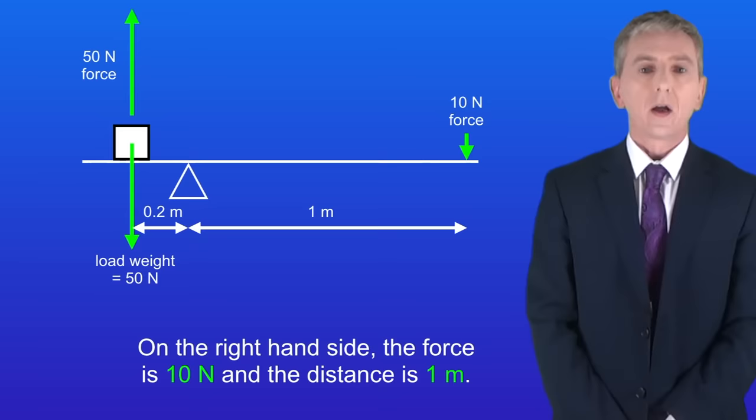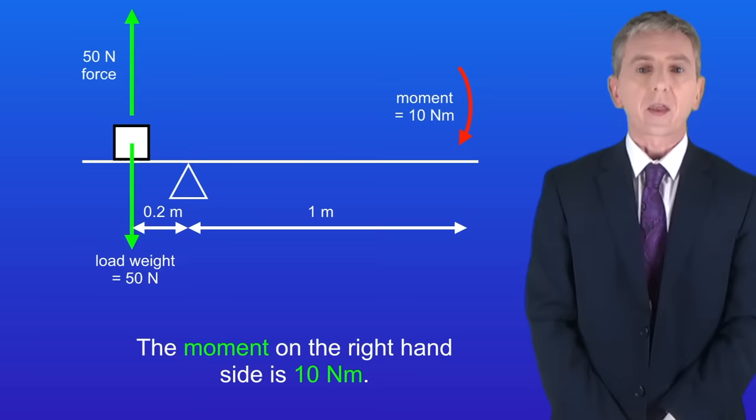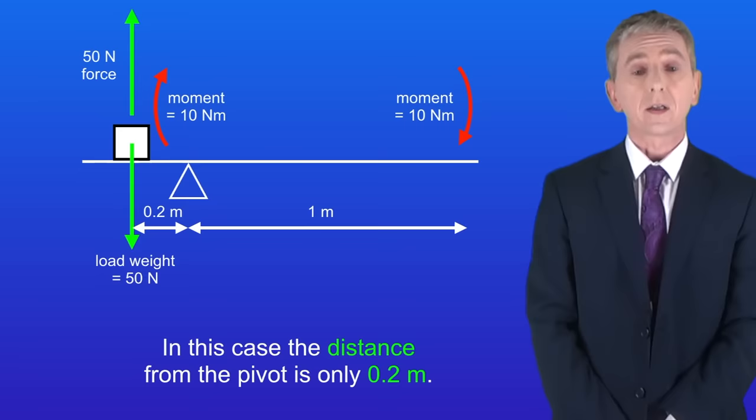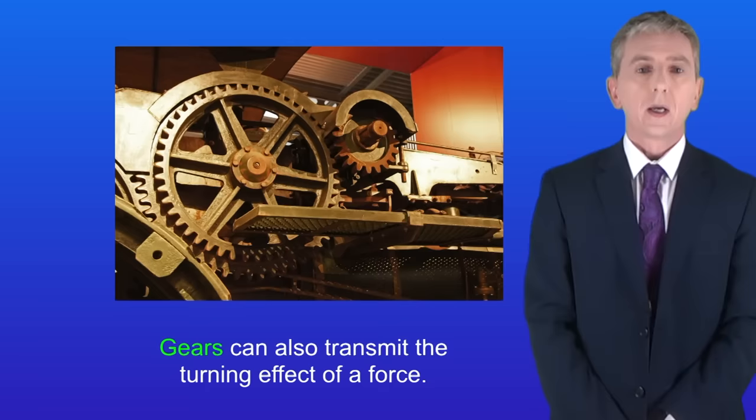Remember that the moment equals the force multiplied by the distance. On the right hand side the force is 10 newtons and the distance is one meter. This means that the moment on the right hand side is 10 newton meters. The moment on the left hand side must also be 10 newton meters. However in this case the distance from the pivot is only 0.2 meters. That means that the force must be 50 newtons.